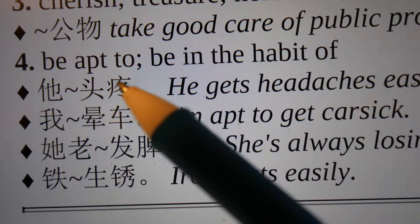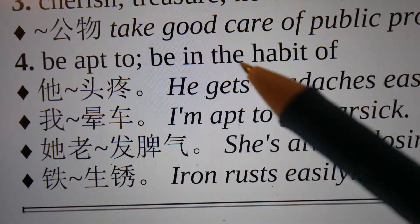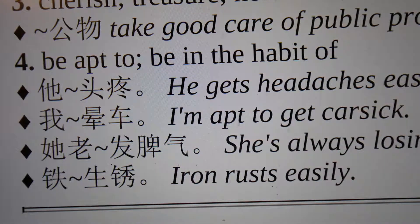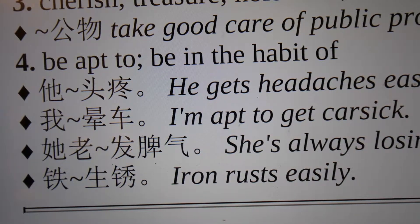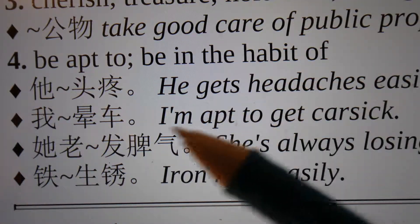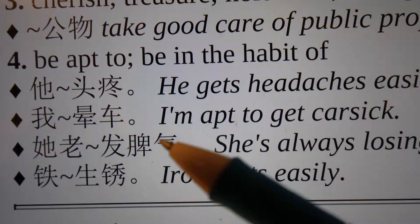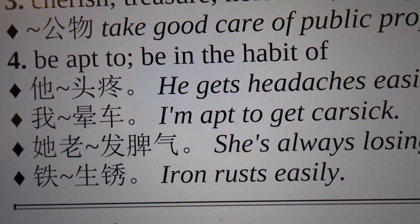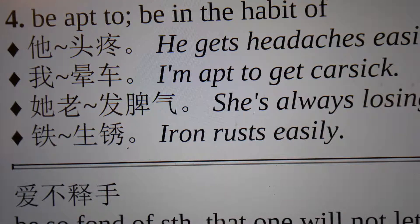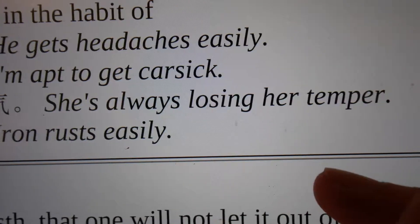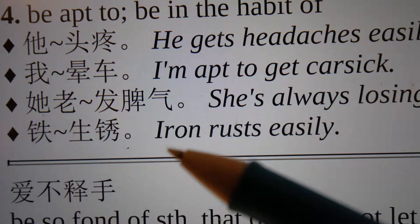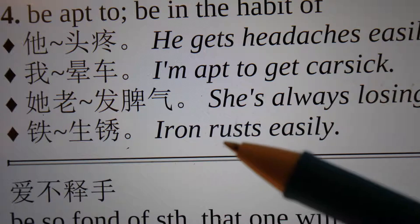The fourth meaning of 爱 can be 'being in the habit of' or 'be apt to.' For example, 她爱头疼 means 'she gets headaches easily,' and 我爱晕车 means 'I am apt to get car sick.' Also, 她老爱发脾气 means 'she is always losing her temper,' and 铁爱生锈 means 'iron rusts easily.'